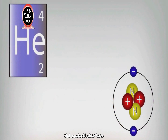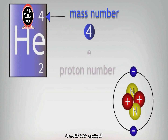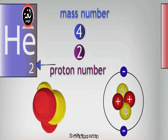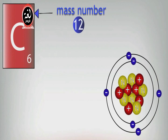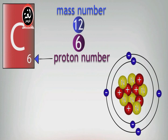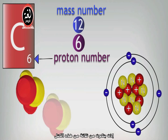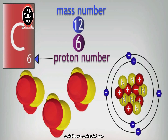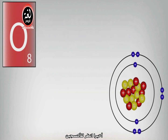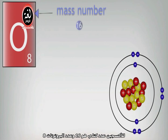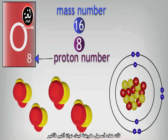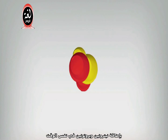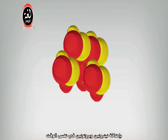Let's look at helium first. Helium has got a mass number of four, a proton number of two. Carbon has got a mass number of 12 and a proton number of six, so it could be made up of three of these blocks of two neutrons and two protons. Oxygen has got a mass number of 16 and a proton number of eight, and it can be made up of four of these building blocks.